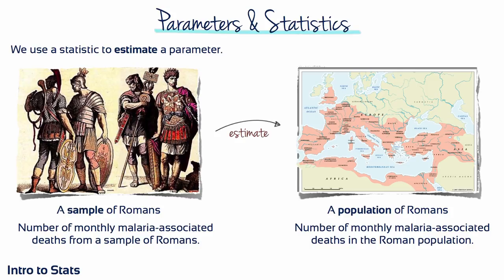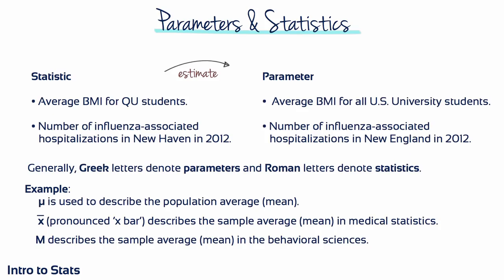A substantial amount of biostatistics is concerned with the relationship between sample statistics and the corresponding population parameters. For statistical notation, Greek letters such as mu or sigma are used to indicate parameters, while Roman letters — like those used in the English alphabet — indicate statistics.